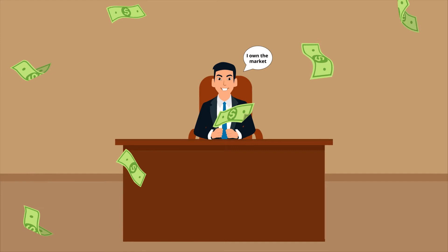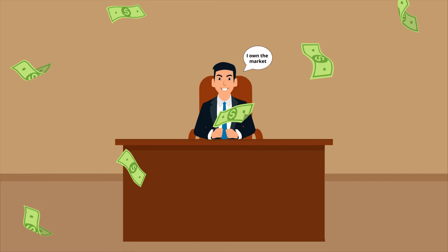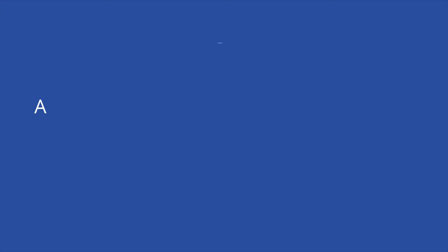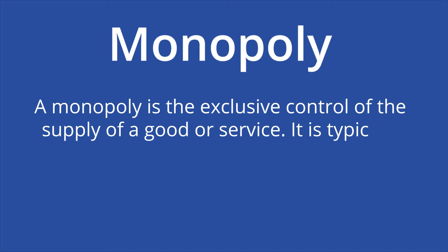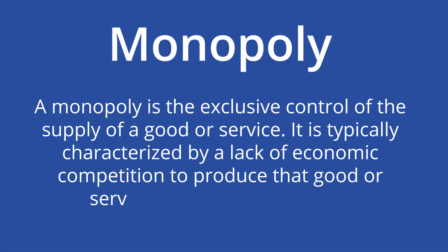It can choose whatever price it wants to sell the mangoes for because it doesn't have to compete with another company that sells the same product. Therefore, it has the freedom to charge an unfair price for its mangoes. A monopoly is the exclusive control of the supply of a good or service. It is typically characterized by a lack of economic competition to produce that good or service and has limited viable substitute goods.